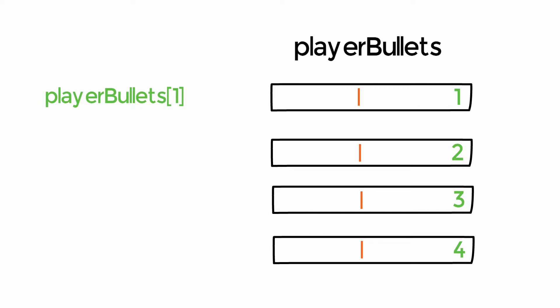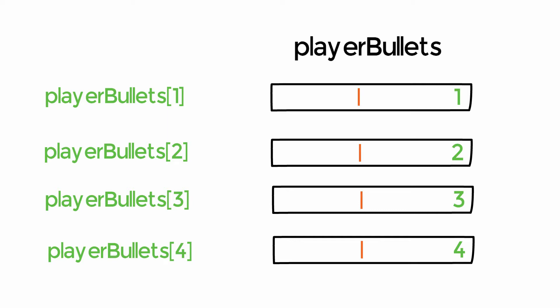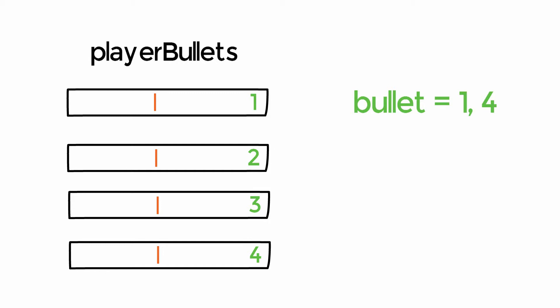We can write player_bullet, then use square brackets with the index number inside. So player_bullet[1] accesses the first element, and we can use player_bullet[2], [3], and [4] to get all elements. The important point is we're using a nice ordered numeric value. Computers are incredibly good at working with numbers. So to check all four bullets, we create a variable that counts up from one to four, then access each element using that variable inside the square brackets — player_bullets[counter] — iterating through all of them.